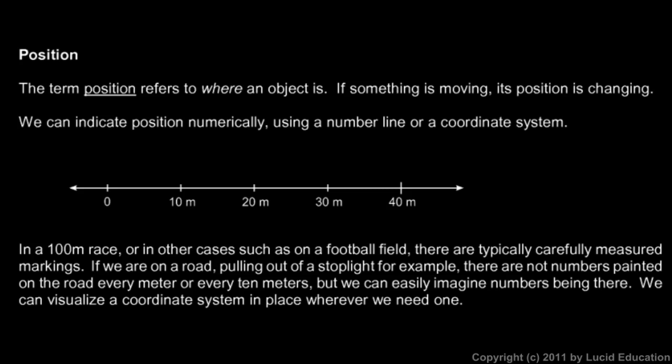We can indicate an object's position by using a number if we imagine a number line or a coordinate system like you see here. So in a 100-meter race, for example, or something like a football field, there are typically carefully measured markings every yard or every meter.